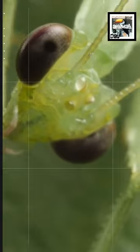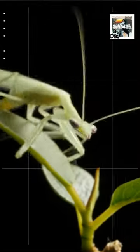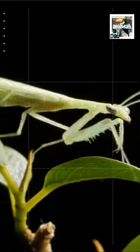Female Praying Mantises occasionally behead and consume their partner during mating. It's thought this makes mating easier and may result in more eggs being made.